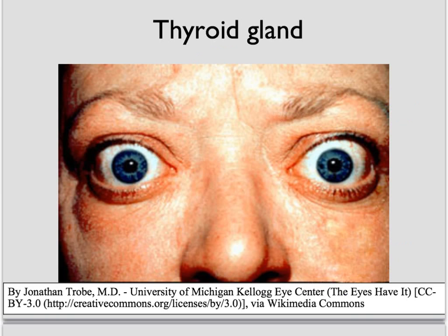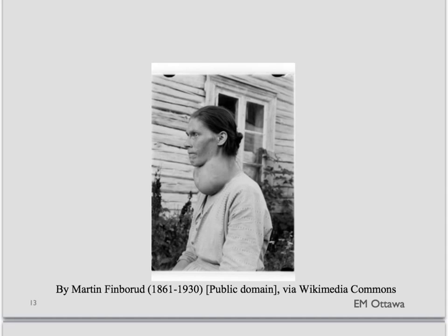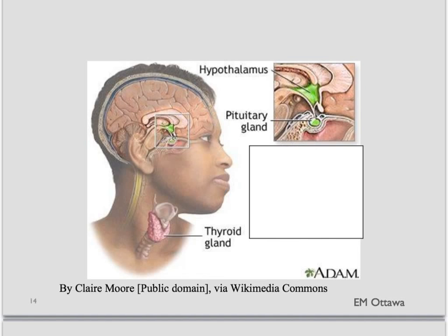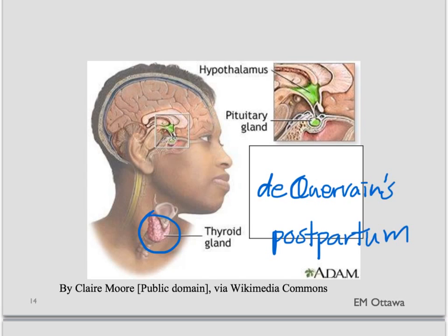Let's look at them. First, Graves' disease — this is an autoimmune disease of the thyroid causing more thyroid hormone to be released. Patients might have exophthalmos, in addition to the other hyperthyroid symptoms we discussed. Another problem of the thyroid could be a multinodular goiter, as evident here. Hyperthyroid state can also be caused by thyroiditis, such as de Quervain's thyroiditis or postpartum thyroiditis. These all cause an existing hyperthyroid state.